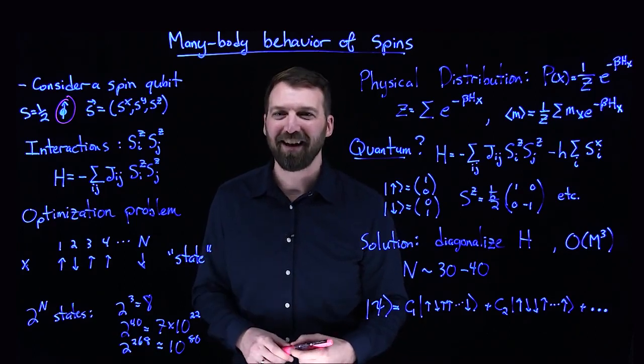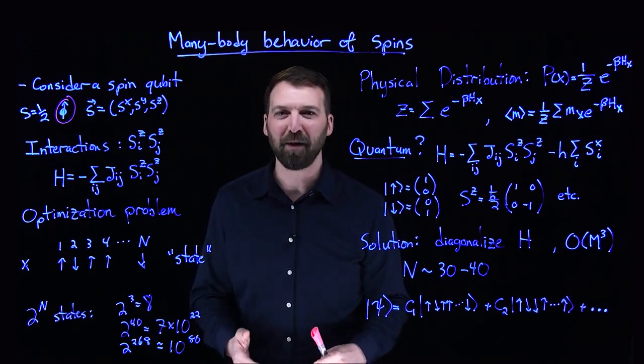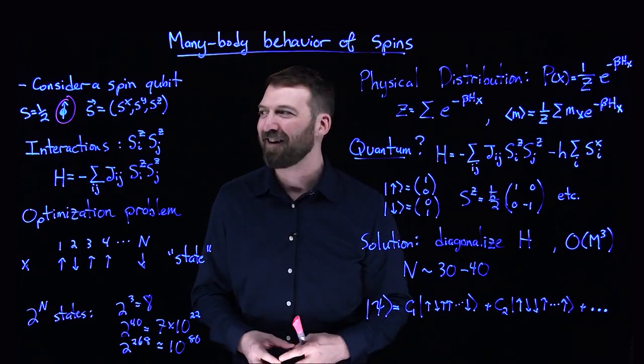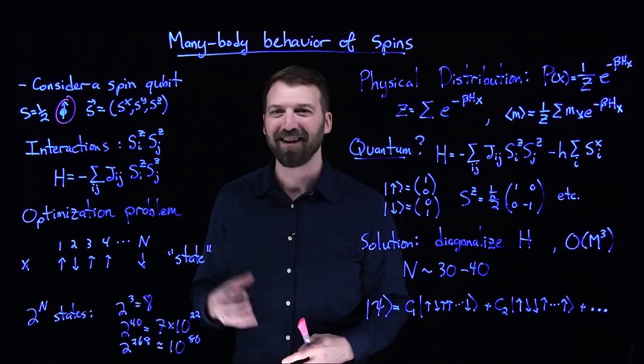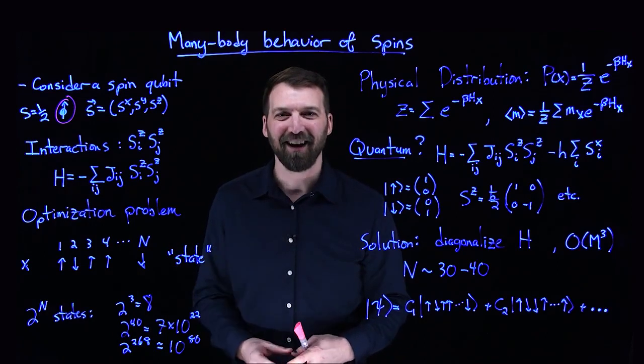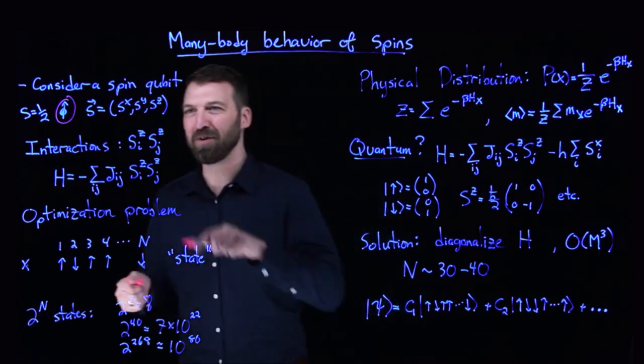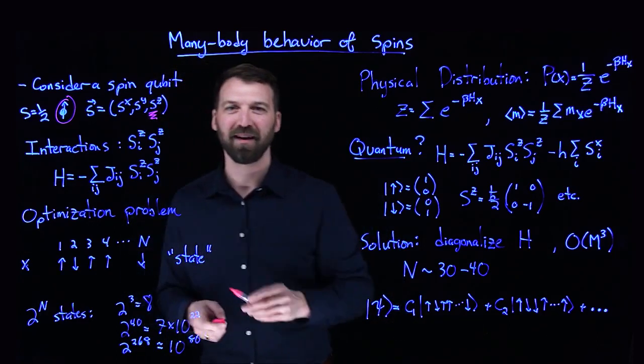We can simplify the many-body problem even further by just considering a classical spin that only has, for example, an SZ component.